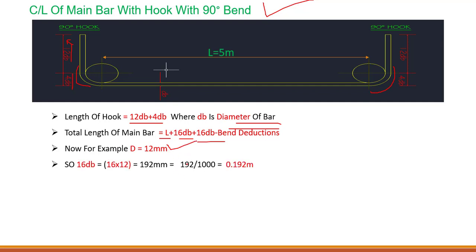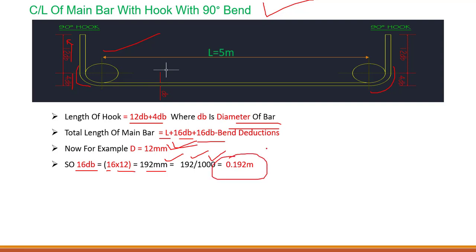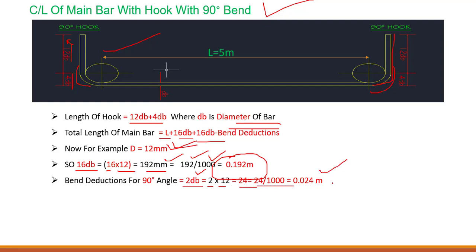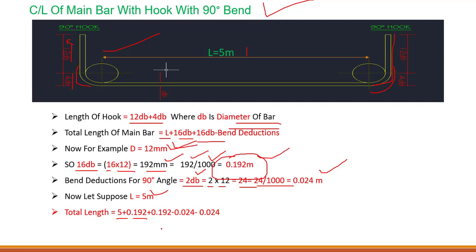For an example with diameter of bar as 12mm, the hook length is 16dB equals 16 into 12mm equals 192mm, which is 0.192 meter. For the bend deduction at 90 degrees we take 2d, so 2 into 12 equals 24mm or 0.024 meter per bend. Taking length as 5 meter, total cut length equals 5 plus 0.192 plus 0.192 minus 0.024 minus 0.024, giving a total length of 5.336 meters.